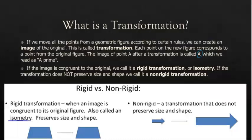Here's a picture of a rigid transformation. This trapezoid just slid over and it's still the same size and the same shape — it's isometry. This would be a non-rigid transformation: this little arrow slid over here but it became a big arrow, so it changed size. An enlargement, reduction in size, or a shape change would be a non-rigid transformation.